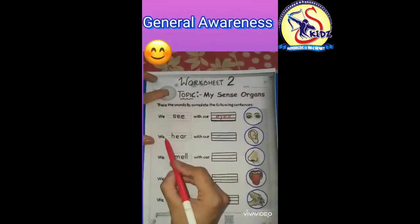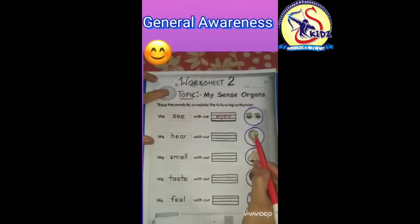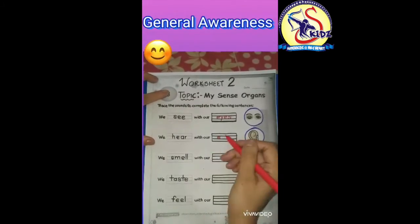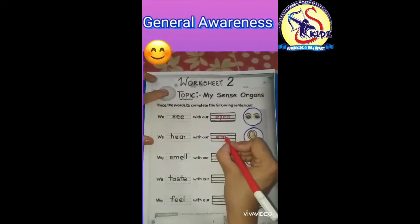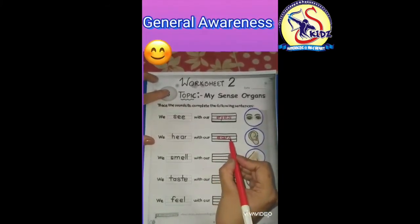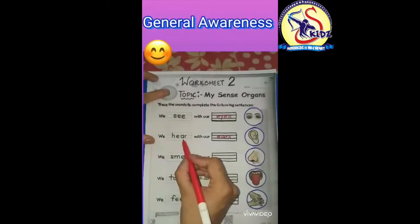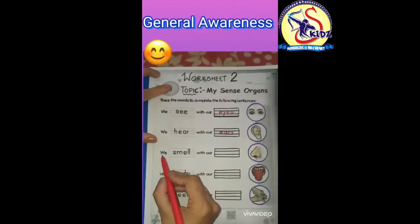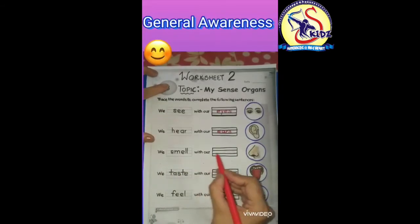We hear with our ears. We will trace the word and complete the sentence: E-A-R-S, ears. E-A-R-S, ears. We hear with our ears.